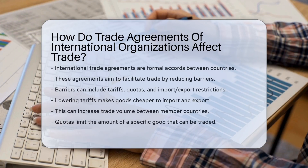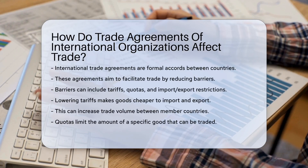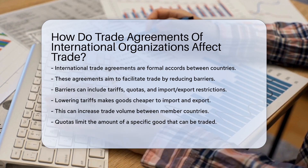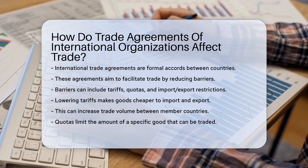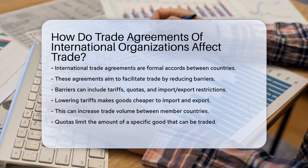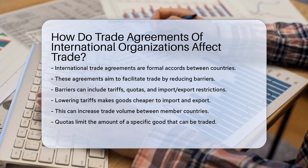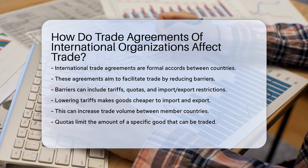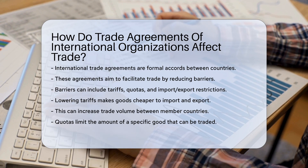International trade agreements are formal accords between countries. These agreements aim to facilitate trade by reducing barriers. Barriers can include tariffs, quotas, and import-export restrictions.